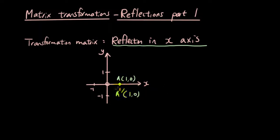Now the image of A, we're going to put in the first column of our transformation matrix. So I'm going to put the answer which is 1, 0 in the first column of my transformation matrix.